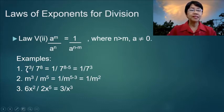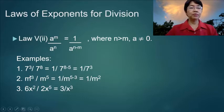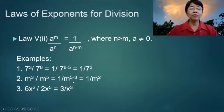Examples: 7 cubed over 7 to the 8th power equals 1 over 7 to the 8 minus 5, or 1 over 7 cubed. And then number 2: m cubed over m to the fifth is equal to 1 over m to the 5 minus 3, which equals 1 over m squared.